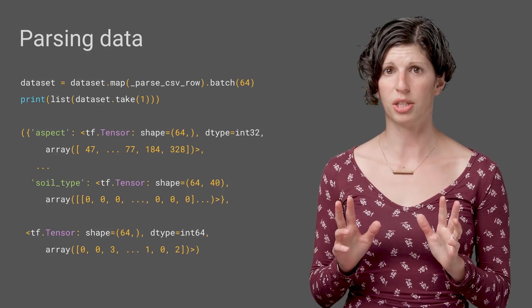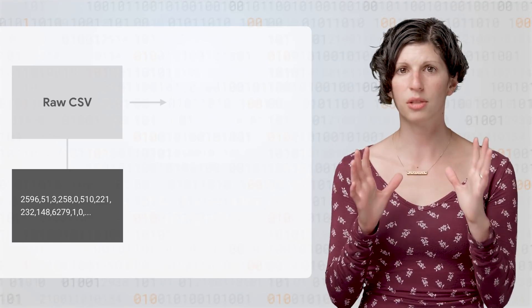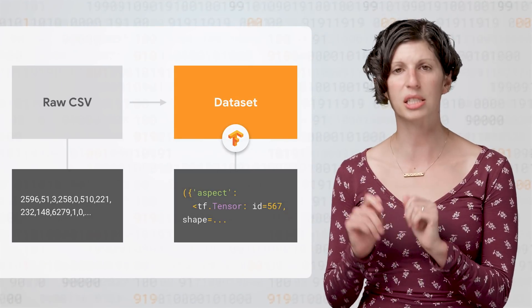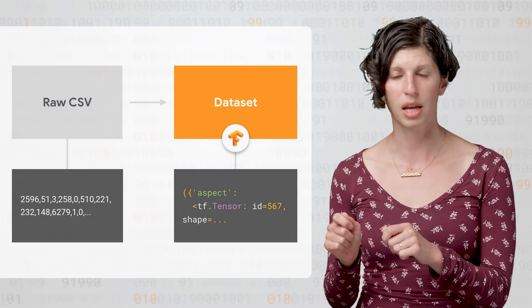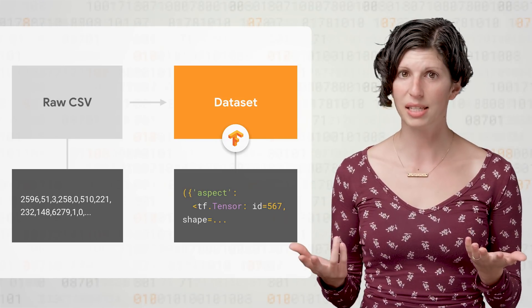Just to keep our eyes on the big picture here, let's see where we are. We've taken our raw data and put it into a TensorFlow dataset that generates dictionaries of feature tensors and labels. But something is still wrong with the integers we have as features here. Anyone care to venture a guess?